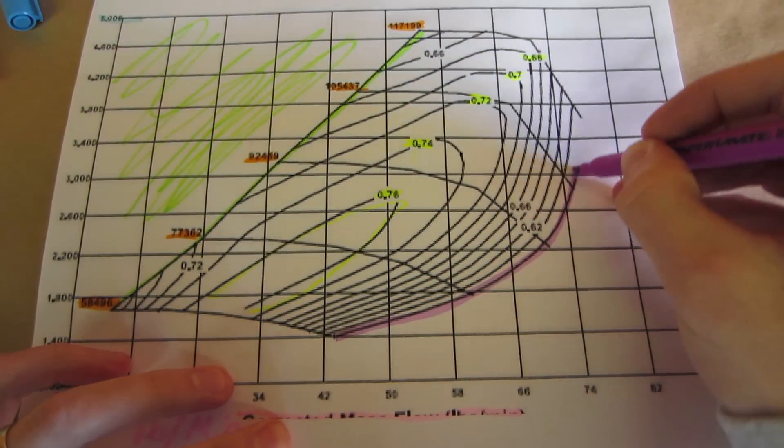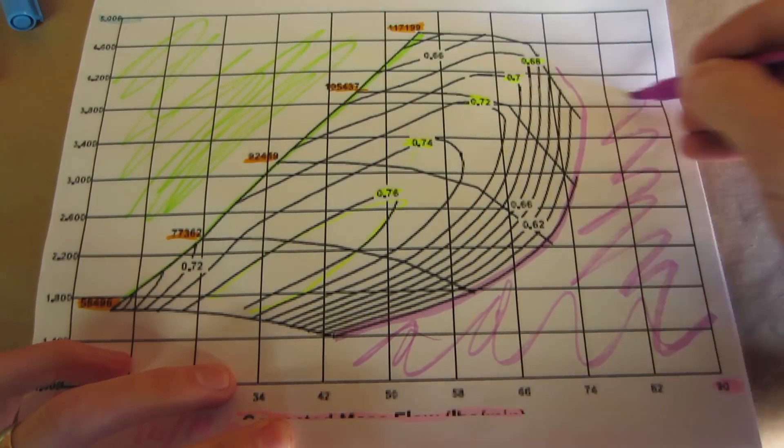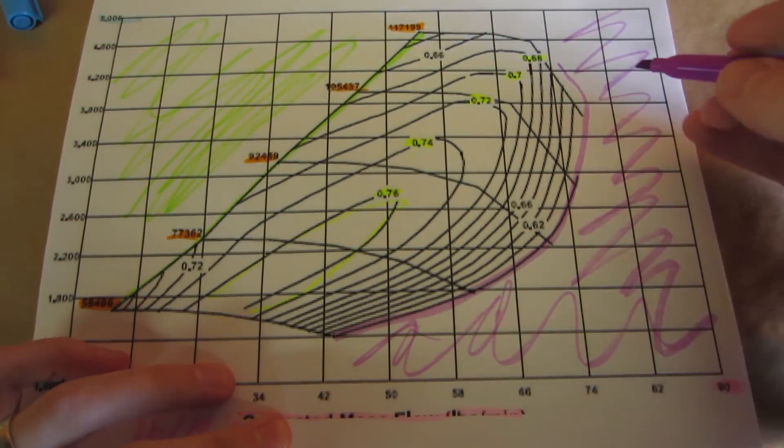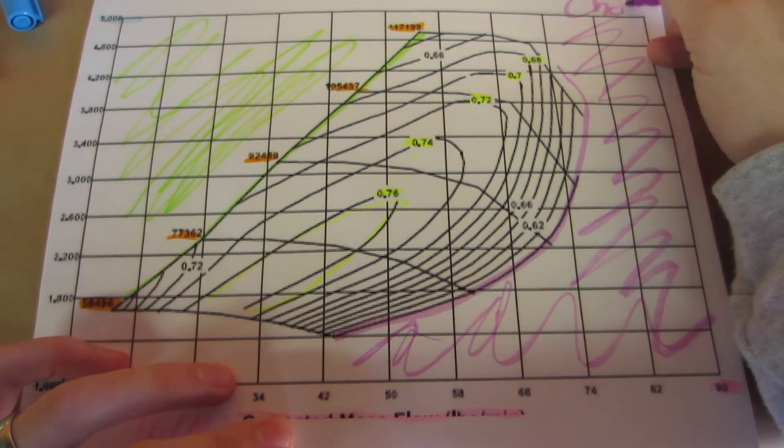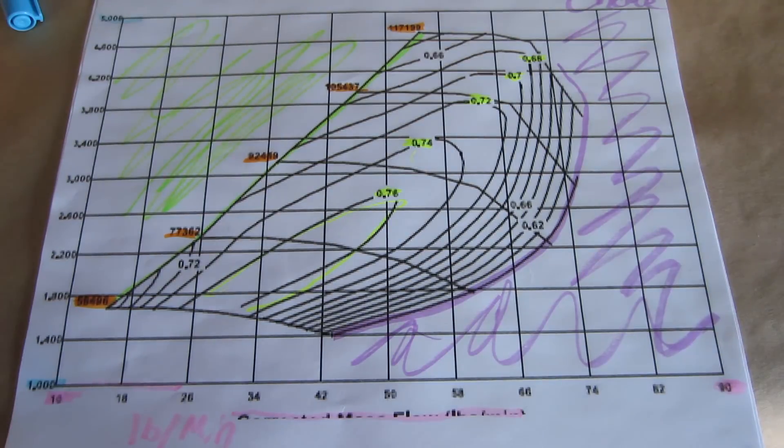The right side of the map represents the choke section of the compressor. Any point plotted in this area means the compressor is too small to reach the desired power and boost. This also means that efficiency goes out the window because the wheel chops the air so badly that the poor density of the air charge and extra heat will result in a major loss in power.